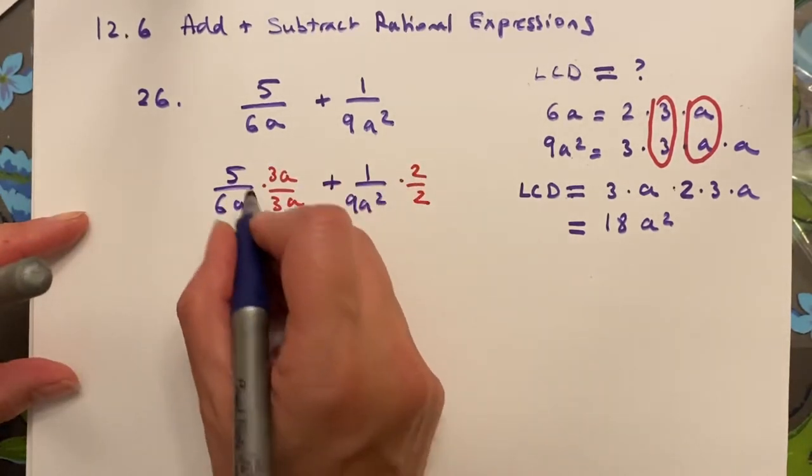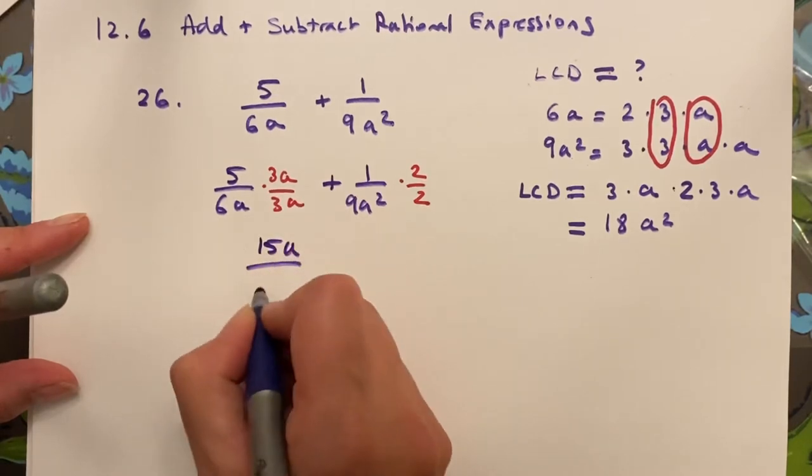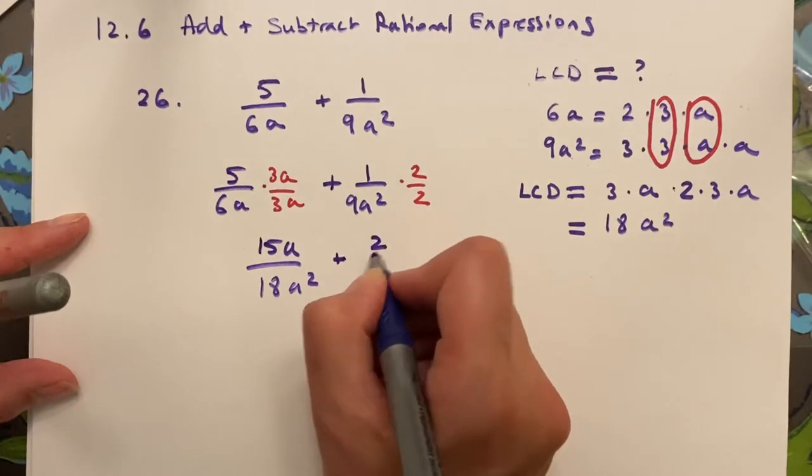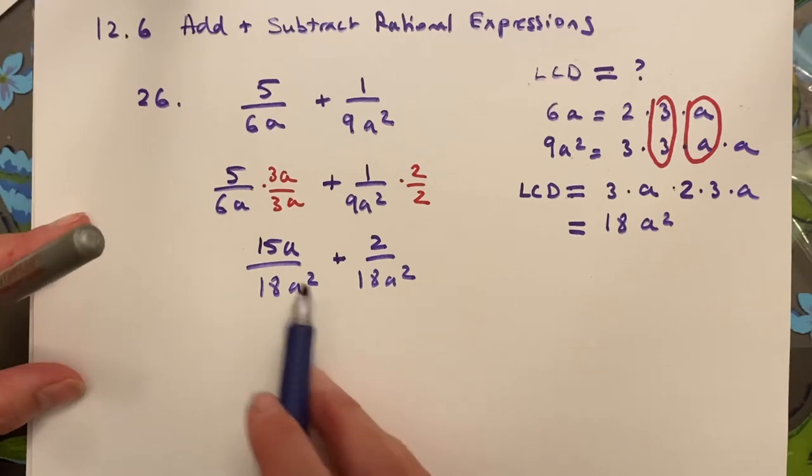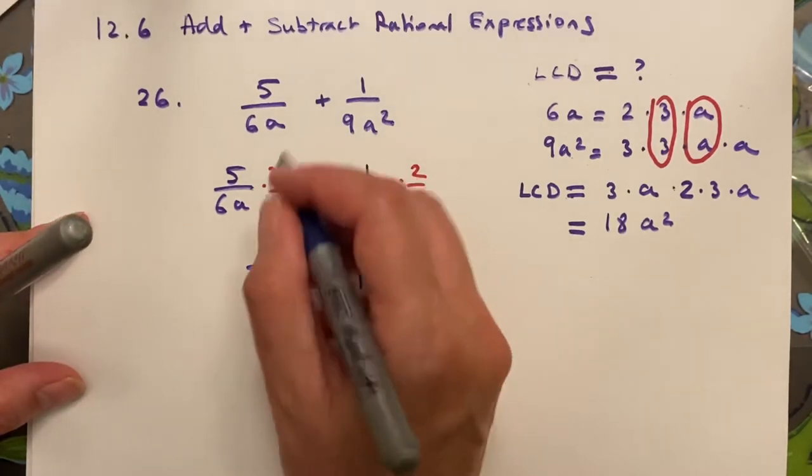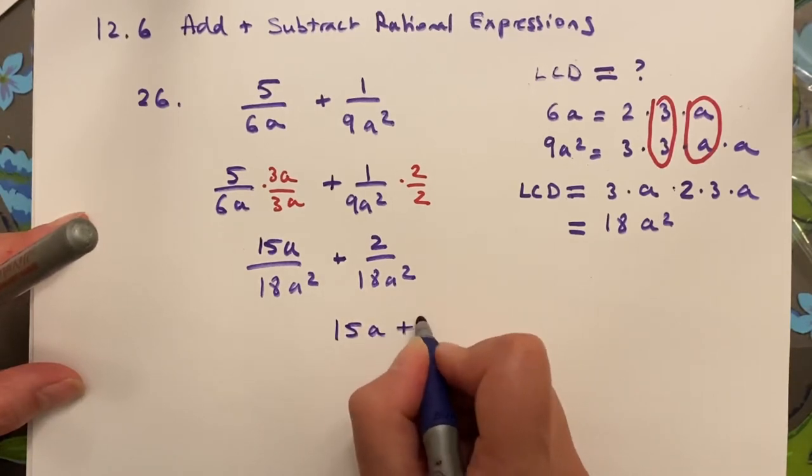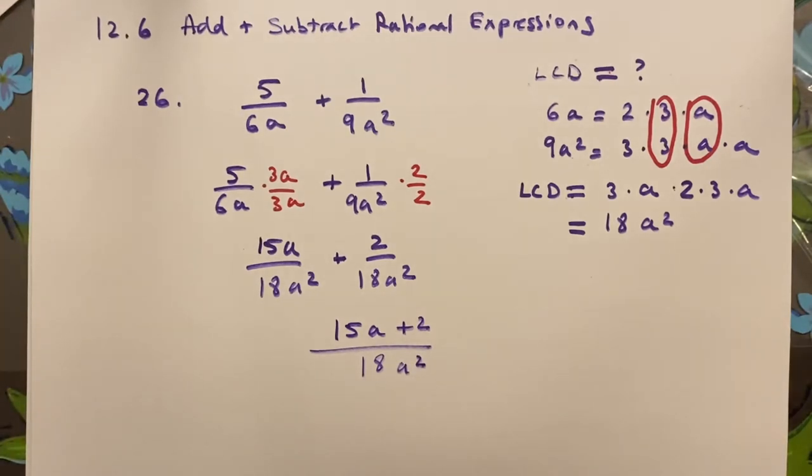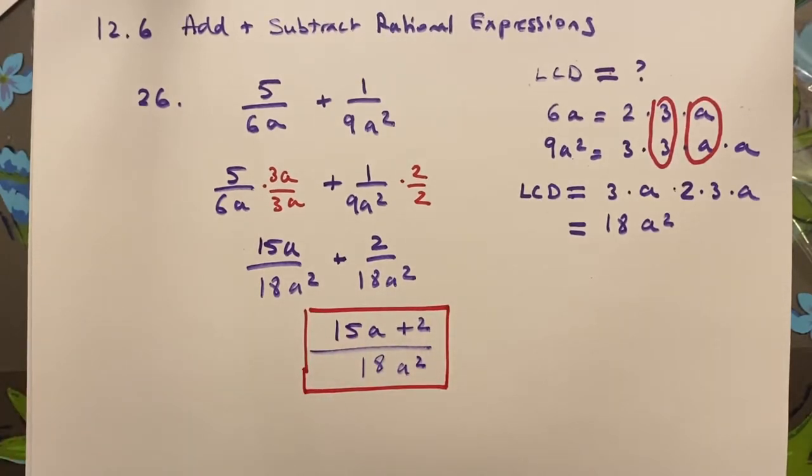So I can multiply everything out now, and I get 15a over 18a squared plus 2 over 18a squared. Now that I have a common denominator, I can add everything together. So my final answer is 15a plus 2 over 18a squared. That is number 26.